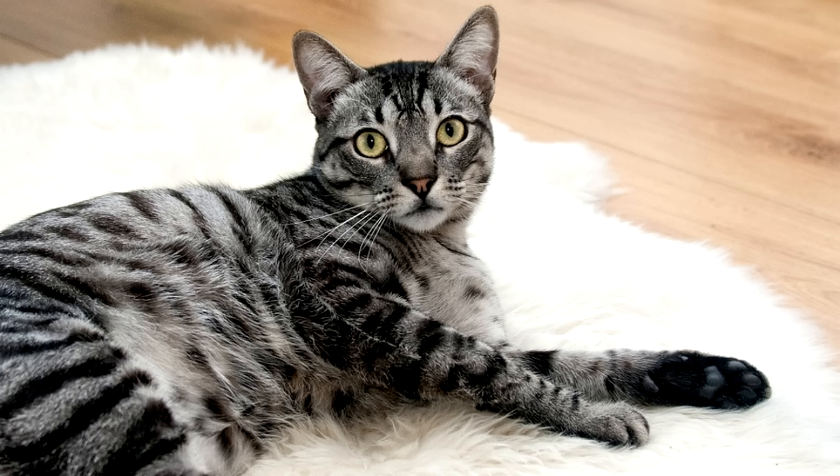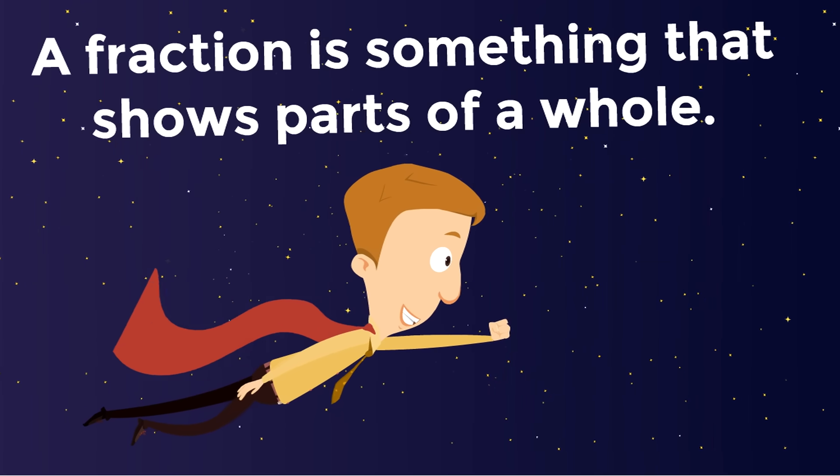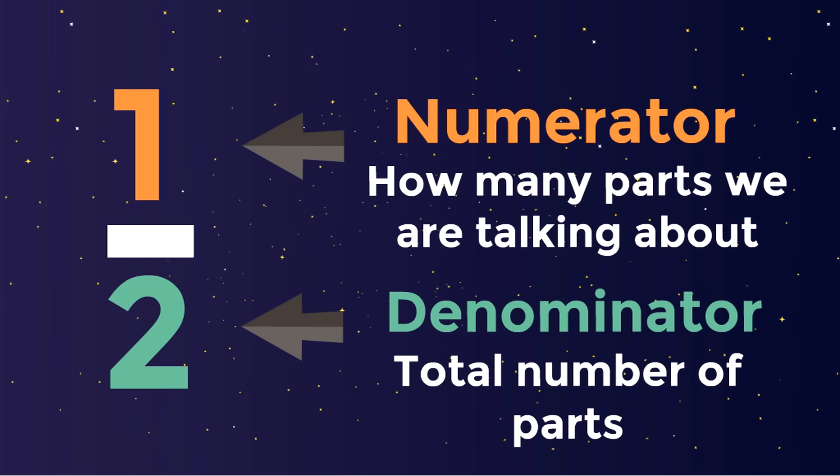A fraction is something that shows parts of a whole. The top number of a fraction is the numerator, how many parts we are talking about. And the bottom number of a fraction is the denominator, the total number of parts.